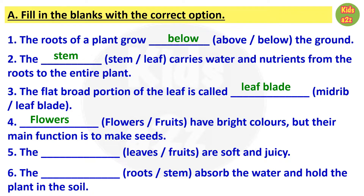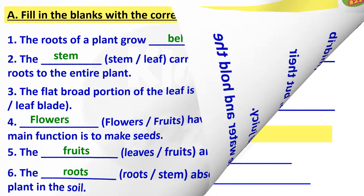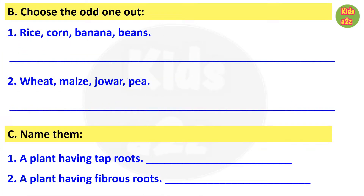The answer for question five is fruits. Question six: the roots or stem absorb the water and hold the plant in the soil. The answer is roots. For question B, kids need to choose the odd one out from the given options.